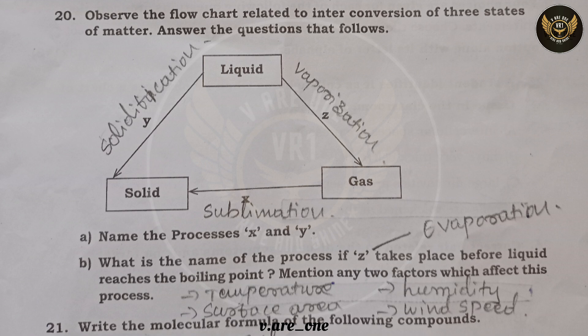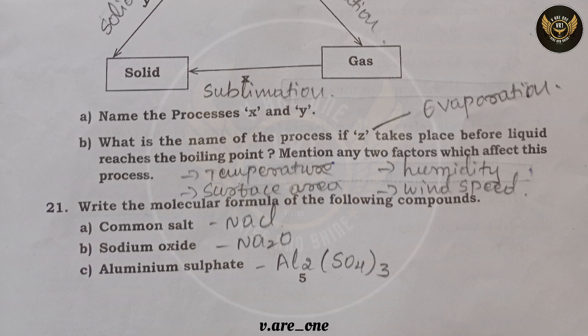Question twenty: in the given flow chart — conversion from liquid to solid is solidification (Y), conversion from gas to solid is sublimation (X), and conversion from liquid to gas is vaporization (Z). Process Z that takes place before the liquid reaches boiling point is evaporation. Evaporation is affected by temperature, surface area, humidity, and wind speed.